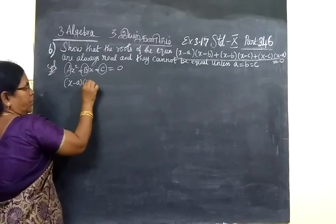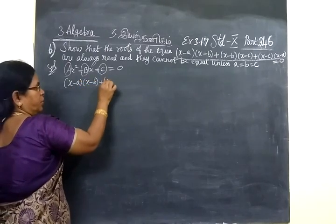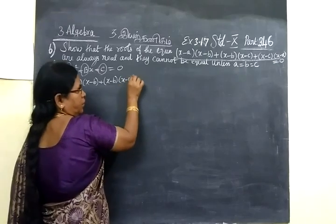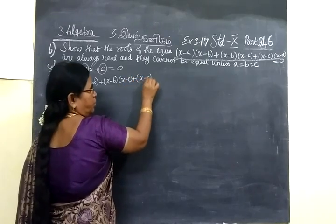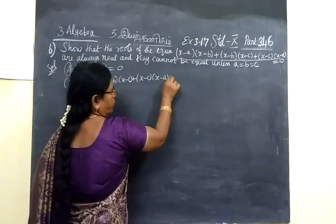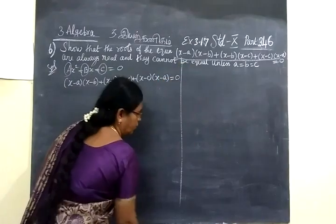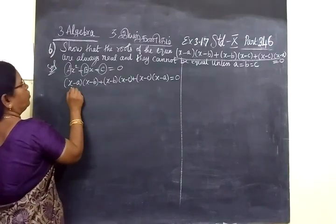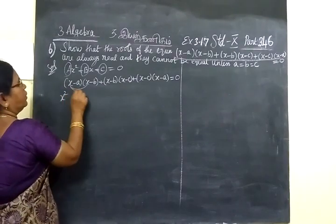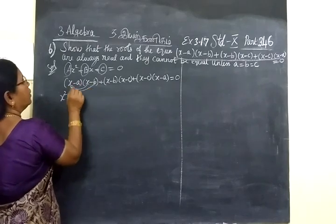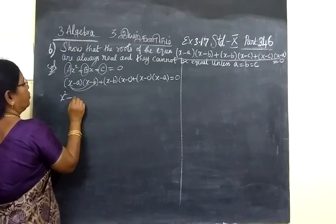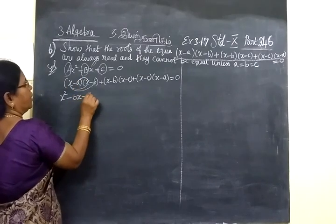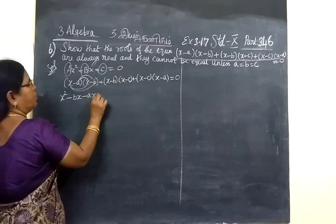We write the equation as (x minus a)(x minus b) plus (x minus b)(x minus c). Now we multiply: x into x gives x², x into negative b gives minus b, negative a into x gives minus a, and negative a into negative b gives plus ab.